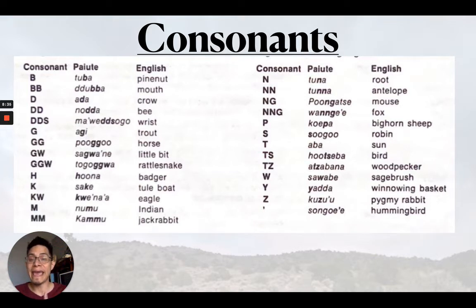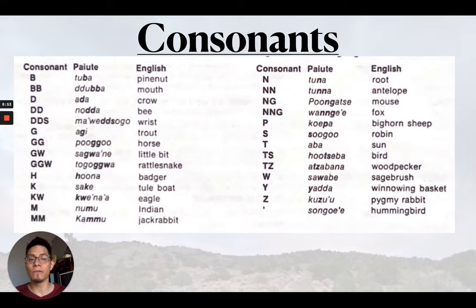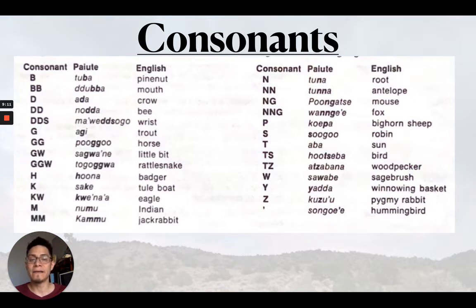The singular m is just an m sound, kind of quick — 'numa,' 'numa,' versus the double m in the word for jackrabbit, it's lengthened — 'kam.' Same with the singular n, in the word for root, 'dna,' versus 'dna' for antelope. Notice the pronunciation changes and the meaning changes — that's important. NG singular is 'bungatsi' for mouse, but it's a bit lengthened in the word 'wangii,' meaning fox.